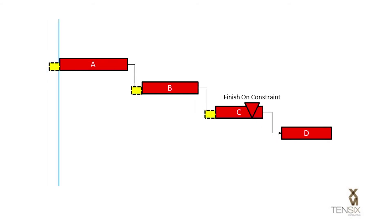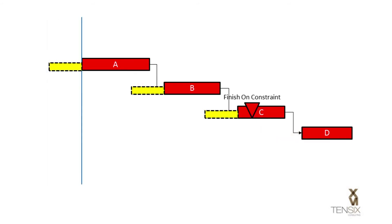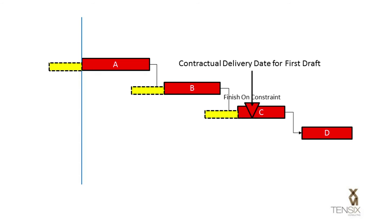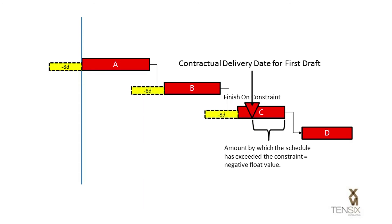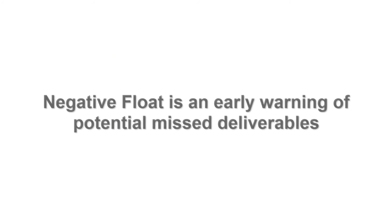Therefore, if you see negative float on your schedule, it indicates that a constraint date has been exceeded. If this constraint was an appropriately applied constraint, say a contractual delivery date, your project is now going to miss that date. Therefore, negative float is an early warning that you will fail to meet an important delivery date in your schedule. In many respects, negative float is an early warning tool to help you manage the problem before it happens.